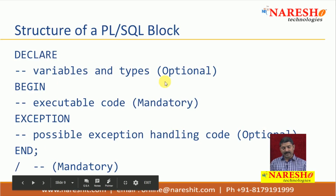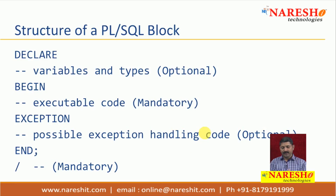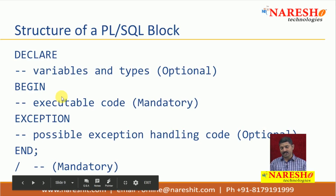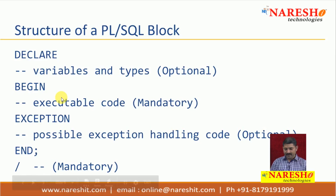So DECLARE, BEGIN, EXCEPTION, and END are the four blocks, and all these things together also form a block. Out of those four blocks, the DECLARE block is optional and the EXCEPTION block is also optional. You can declare variables and types in the DECLARE block, but if you don't need any variables, you won't need the DECLARE block. The BEGIN and END blocks are mandatory — your executable code goes into the BEGIN block, and END simply has a slash, which is the marker for end of the file.